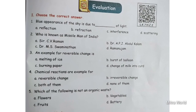Second question: Who is known as Missile Man of India? Options are: Satsi V. Rahman, Dr. APJ Abdul Kalam, Dr. M. Swaminathan, Ramanujam. Who is known as Missile Man of India? Very good. Option B, Dr. APJ Abdul Kalam.